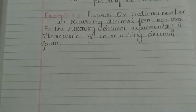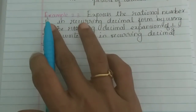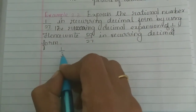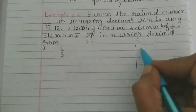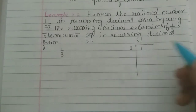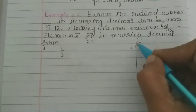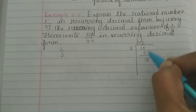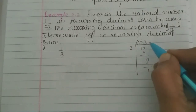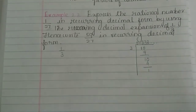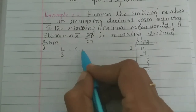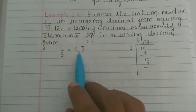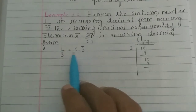The first step is to find 1 by 3. Let us divide 1 by 3. Since 1 is less than 3, we have 0 point. Then 10 divided by 3 gives 3, balance 1; again 3, balance 1 — it goes on. So the recurring decimal form is 0.3 bar. This is the decimal expansion of 1 by 3.